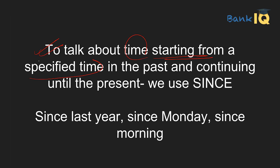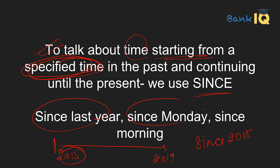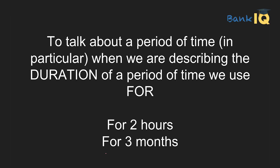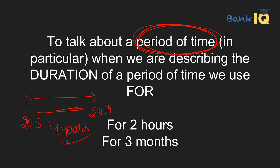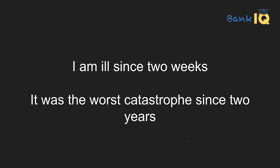To talk about time starting from a specified time period in the past and continuing to the present, we use 'since.' For example: since 2015, since last year, since Monday, 'I'm having pain in my neck since morning.' Whereas when we are talking about a period/duration of time — जैसे 2015 से 2019 तक, a span of 4 years — that duration is represented by 'for': for 2 hours, for 3 months.